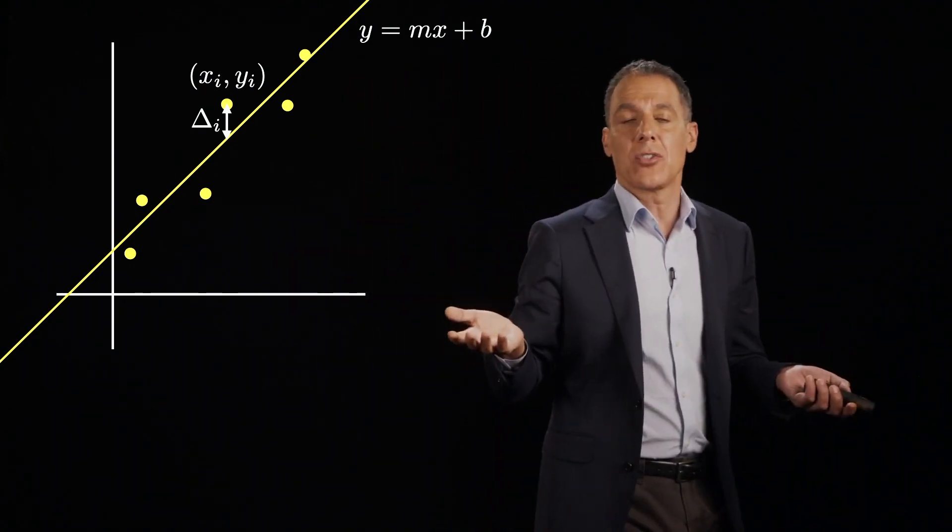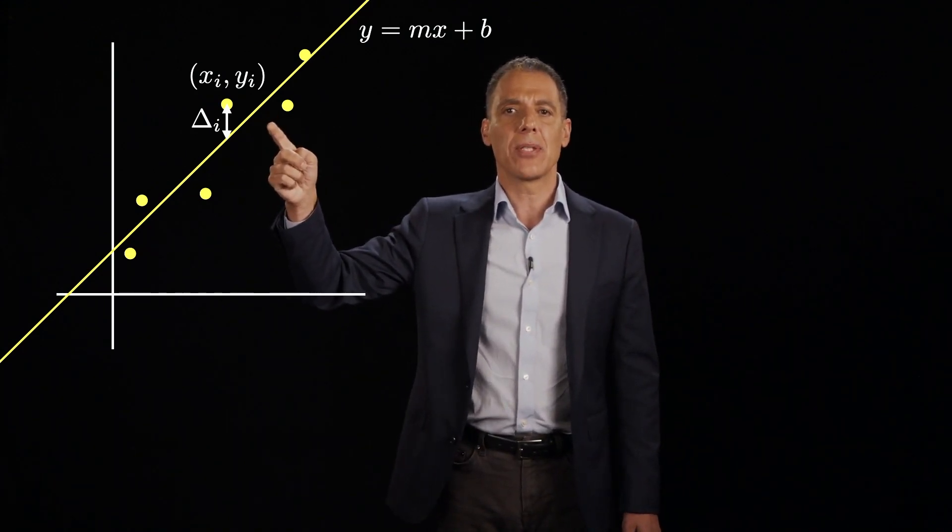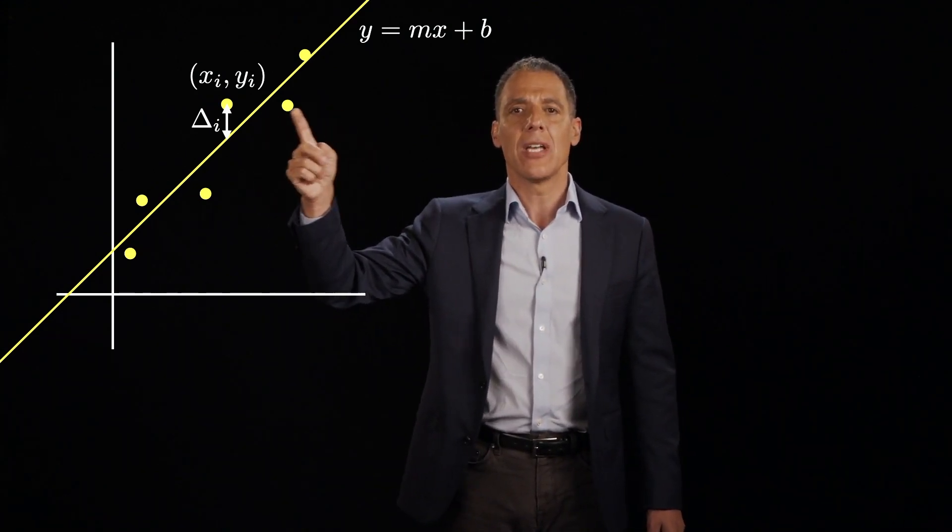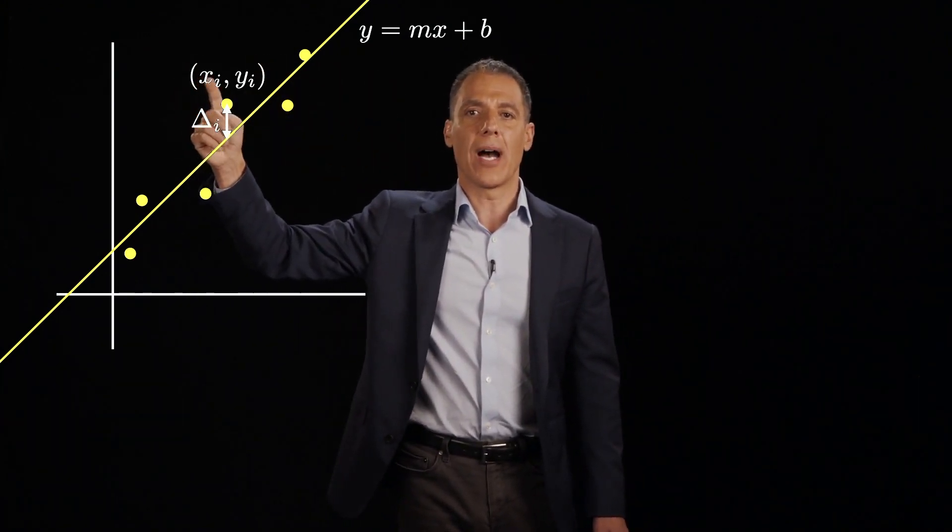Now, maybe later on we don't want to assume that. We'll worry about that later on. But for now, let's think about what happens if we want to minimize this vertical distance. Let me call it delta i for the point xi, yi.